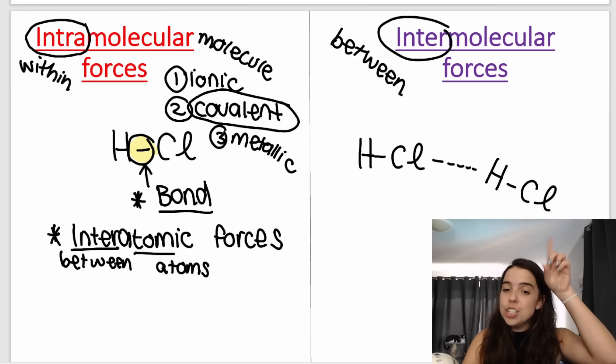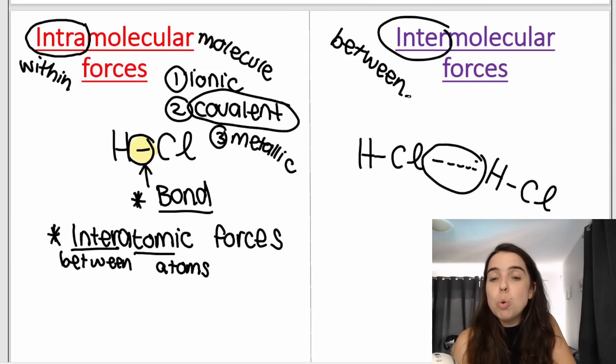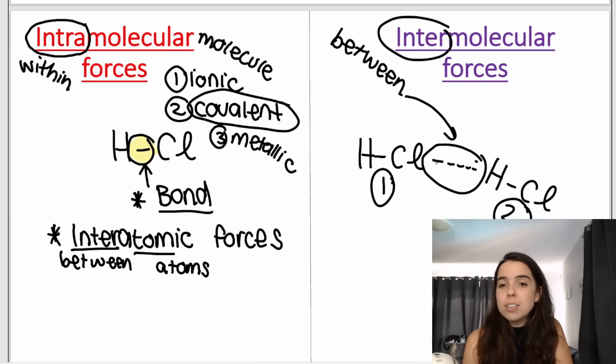If I have an HCl and an HCl, that dotted line represents the attractive forces between the HCl molecules. Take note of how this is between the molecules. This is one molecule over here, this is another molecule over here. This dotted line is between molecules. It's an intermolecular force.